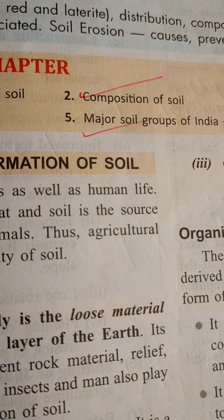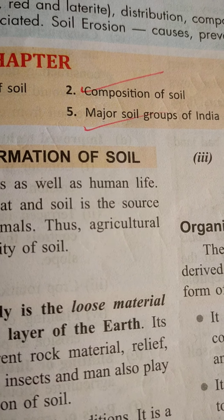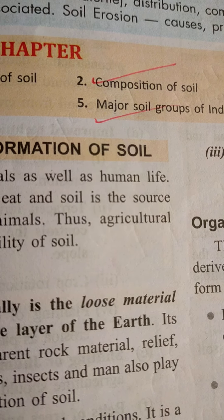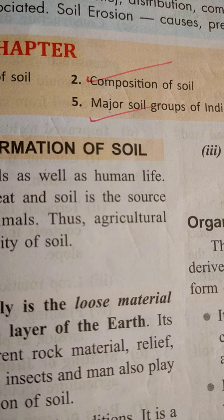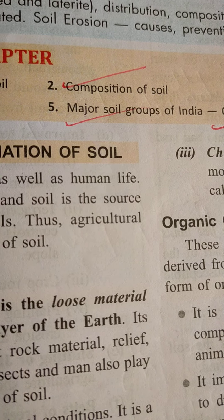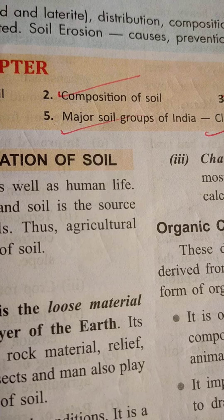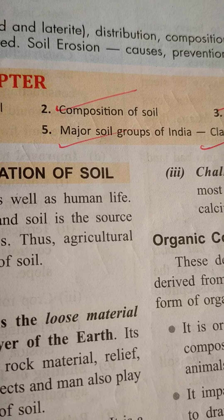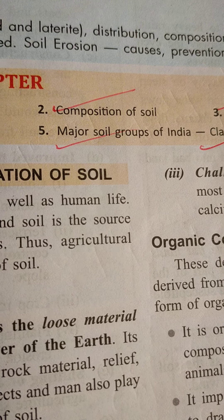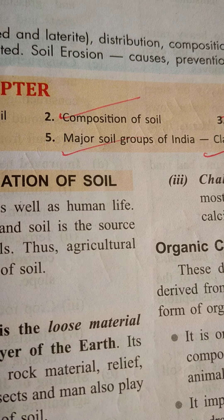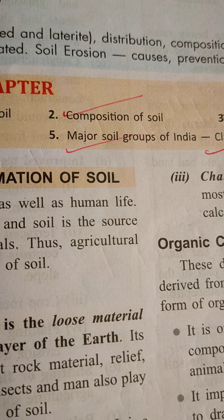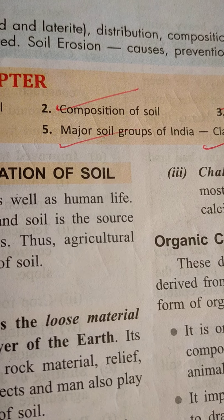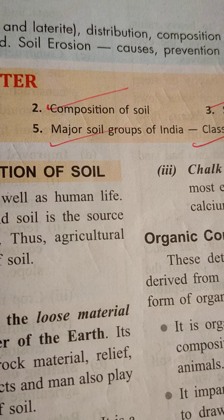Climate, temperature, and rainfall play a very important role in the formation of soil, and vegetation provides decaying matter to the soil. Soil is the essential loose material — or loose rock material — which forms the thin upper surface layer of the earth, and it consists of weathered rock material, decaying organic matter, and living organisms.